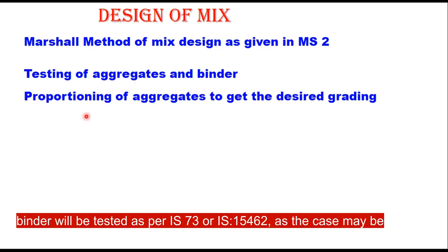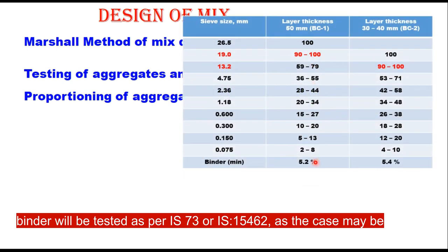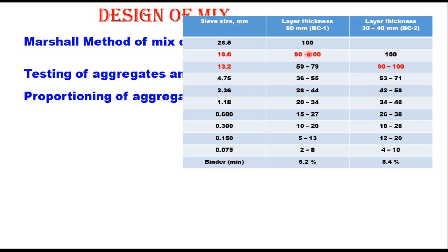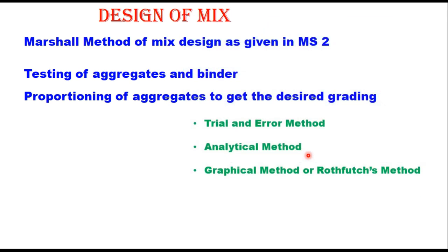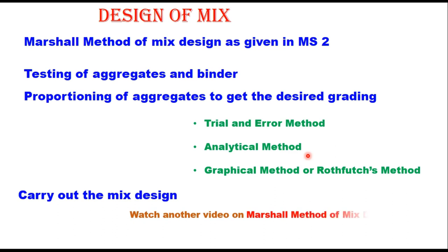The next step is proportioning of aggregates to get the desired grading. Aggregates available at site are suitably proportioned to get the final gradation close to the midpoint of the gradation range given in MORTH specifications. There are several methods of proportioning: trial and error method, analytical method, and graphical method. After proportioning and testing of aggregates and binder, the mix is designed. A separate video covers the Marshall method of mix design in detail.